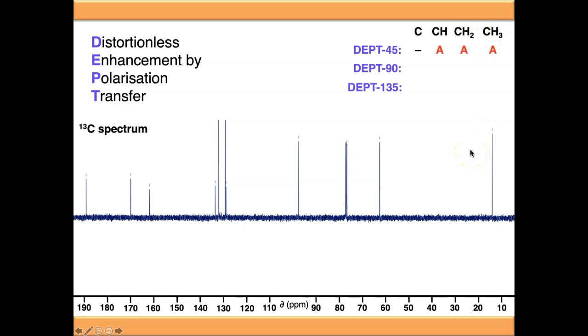A DEPT45 spectrum—basically all the quaternary carbons will disappear and everything else will remain on the spectrum. In a DEPT90 spectrum, everything will disappear apart from the CH carbons. In a DEPT135 spectrum, the quaternary carbons will disappear, the CH and CH3 carbons will appear in one direction either above or below the baseline, and the CH2 carbons will appear on the opposite side of the baseline.